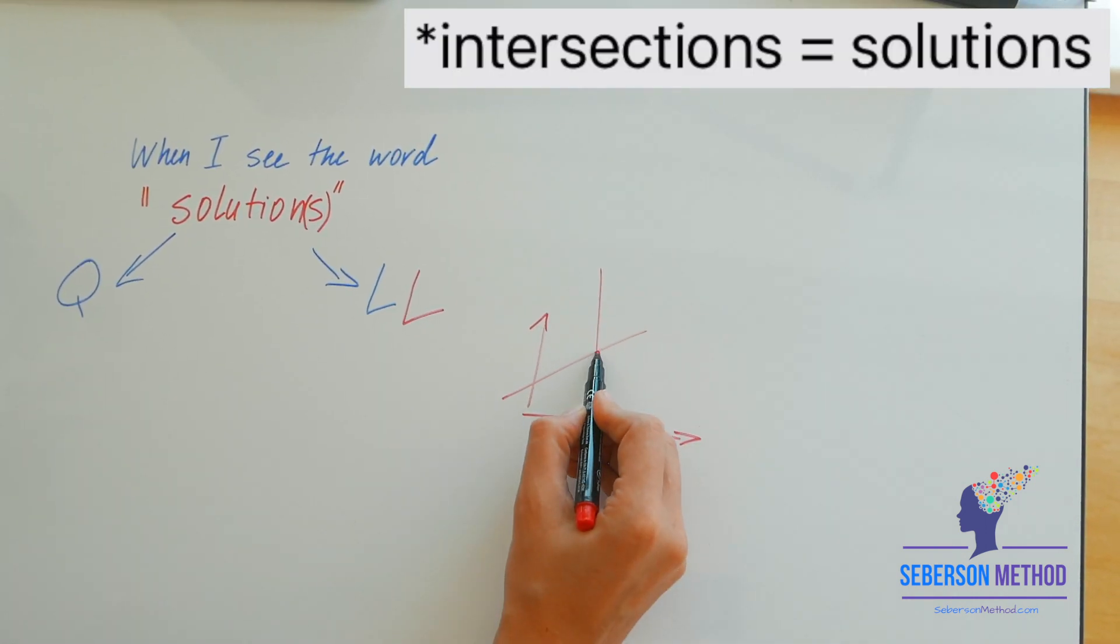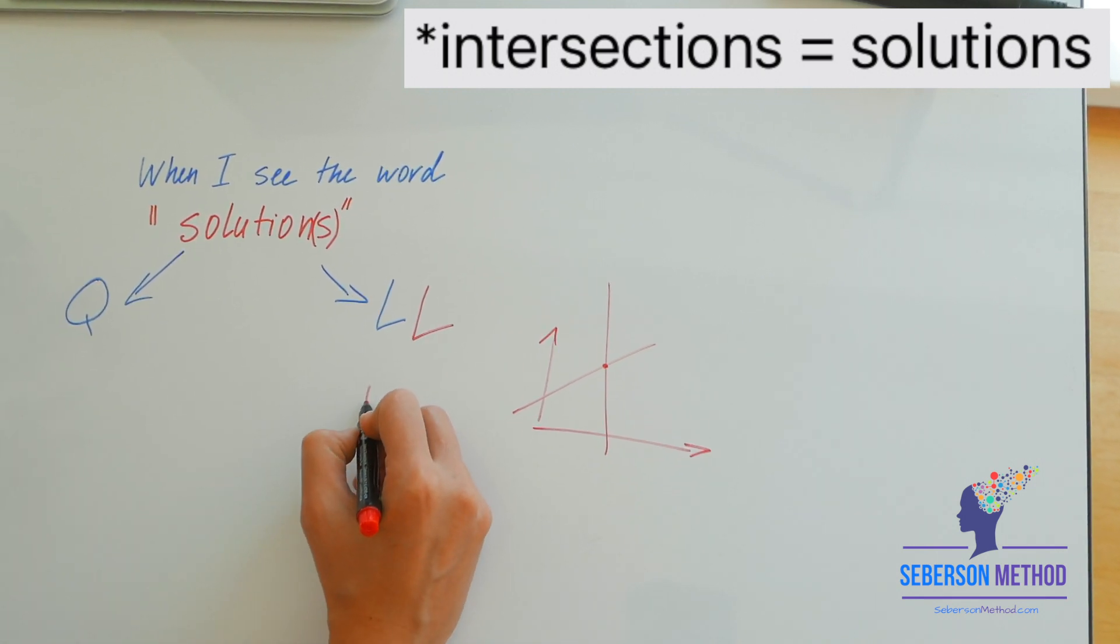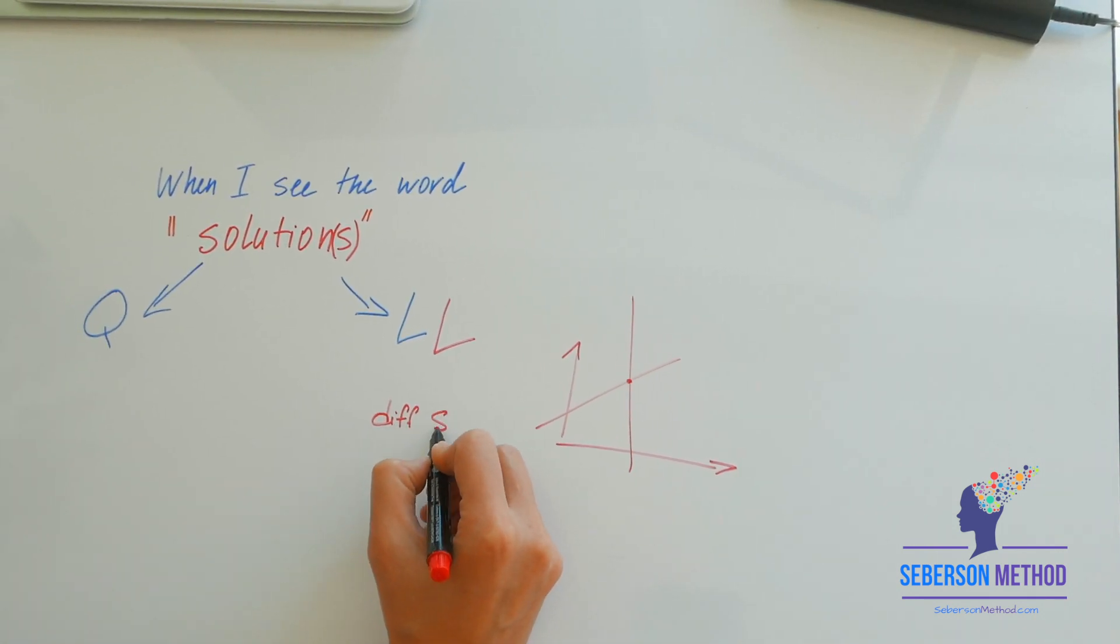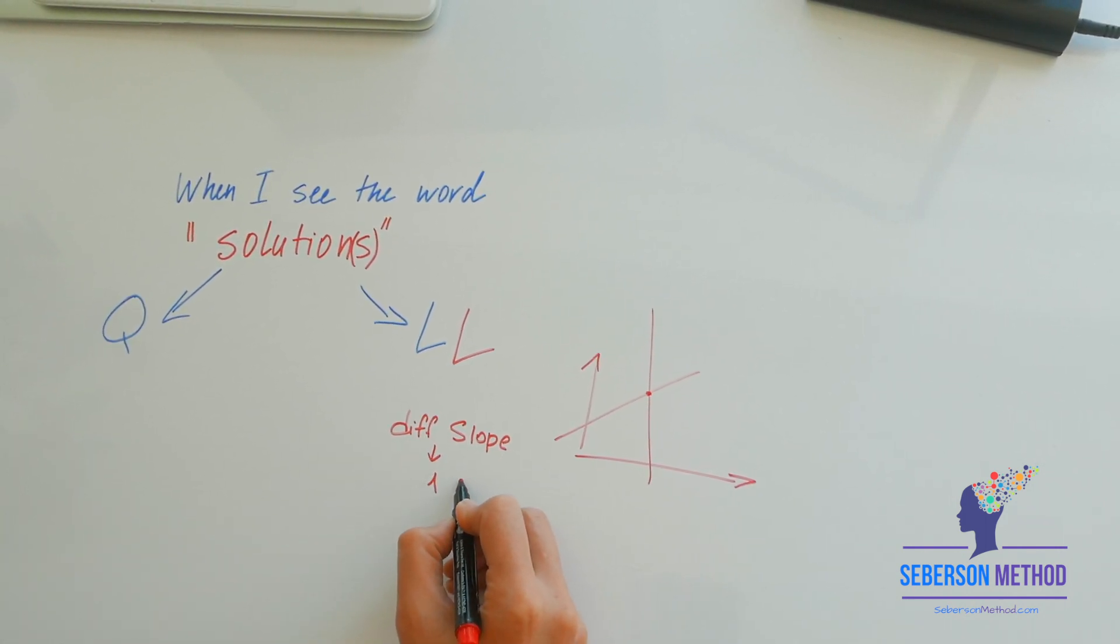At the most, they can intersect once. So when two linear equations have different slope, there is going to be one solution.